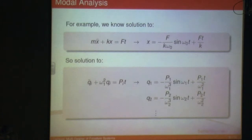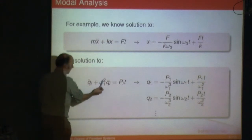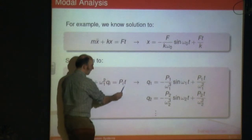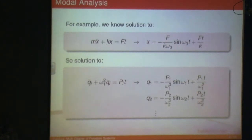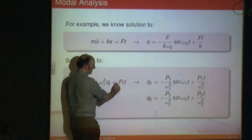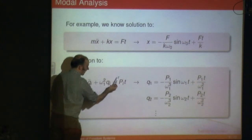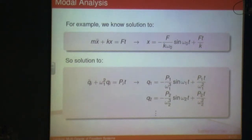I could go on — decaying exponential, sinusoid — it's all the same thing. You just make those substitutions: m is 1, k is ωi², and p and f are matched up, and you'll get the solution. You look at the forcing function and decide which solution to use. If there's a t term, it's linearly increasing force — ramp. If there's no t, it's a constant — step. If there's an exponential e to the minus something, that's a decaying exponential. If there's a cosine, it's a sinusoid.